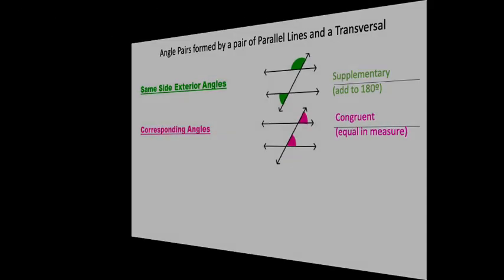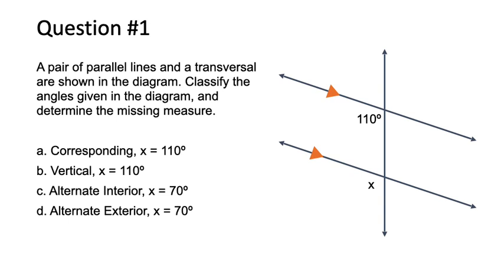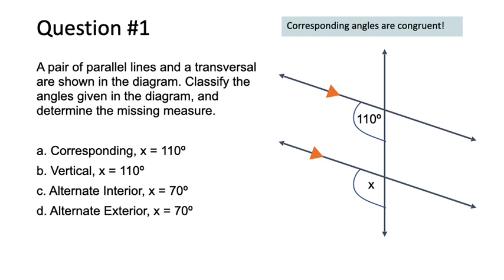Question 1: We have a pair of parallel lines denoted with the orange arrows — a common notation — and a transversal as shown in the diagram. Classify the angles and determine the missing angle measure. These angles are both on the same side of the transversal and both below the parallel lines, so these are corresponding angles. Corresponding angles are congruent; therefore x equals 110 degrees.